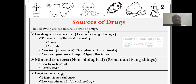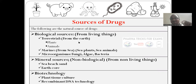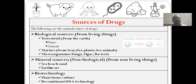First, we will see the classification. The following are the natural sources of the drug — very, very important natural sources. First one is biological sources, from living things. Where will living things be? Terrestrial — from the earth, on the soil — like plants, animals. And from the sea: sea plants, sea animals. Microorganisms like fungi, algae, bacteria. And mineral sources — non-biological, very, very important. Mineral sources are also called non-biological sources.